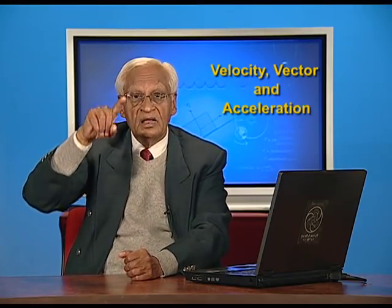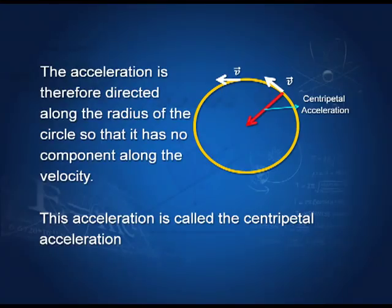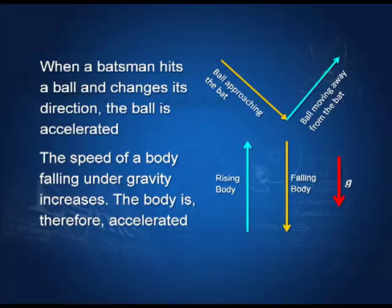A uniform circular motion is not without force — there is a centripetal force acting along the radius. Let us take another example from cricket: the bowler throws a ball and the batsman hits it in another direction. The ball coming in one direction and going in another means the direction has changed and therefore the ball is accelerated. Why? Because the force of the bat acts on it. That is what makes it accelerated motion.